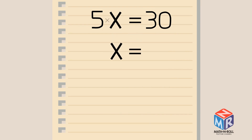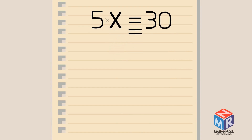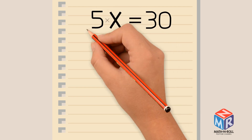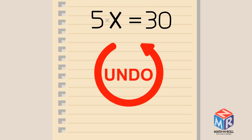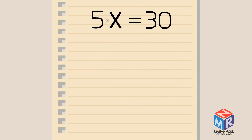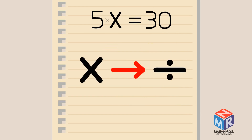We need to get the unknown, x, by itself on one side of the equal sign. Right now, x is not by itself because it's being multiplied by 5. To undo this operation, we need to divide this side by 5.